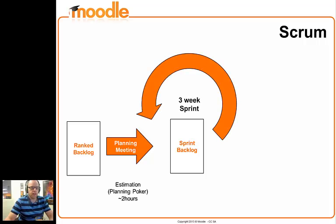The length of our sprints here at the moment is three weeks. The way that we go about doing that is we have a daily scrum which is about 15 minutes, and in between the developers are working on the issues in that sprint backlog in ranked order, trying to complete all of them.